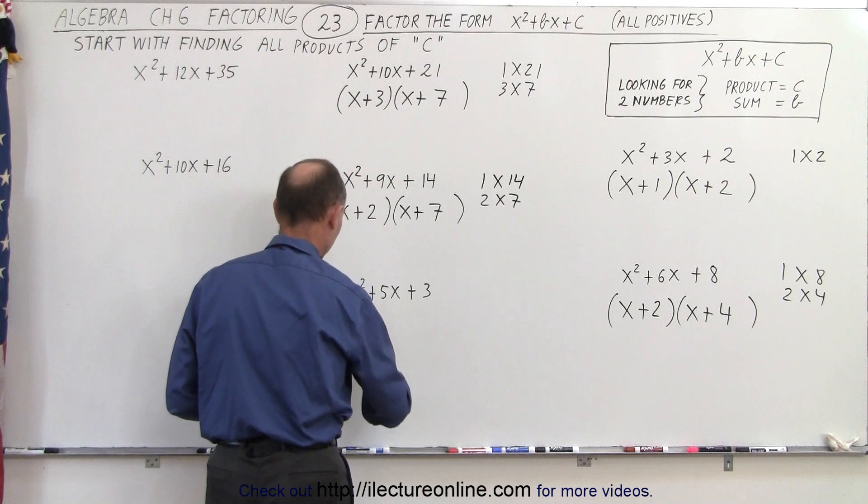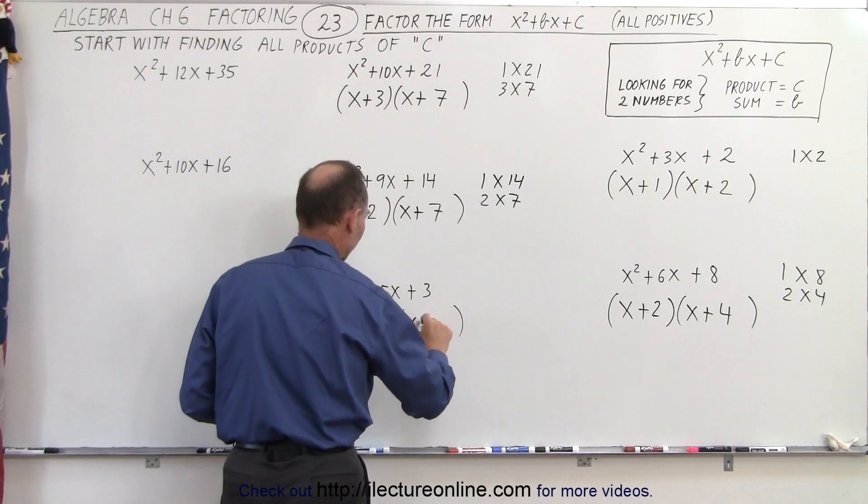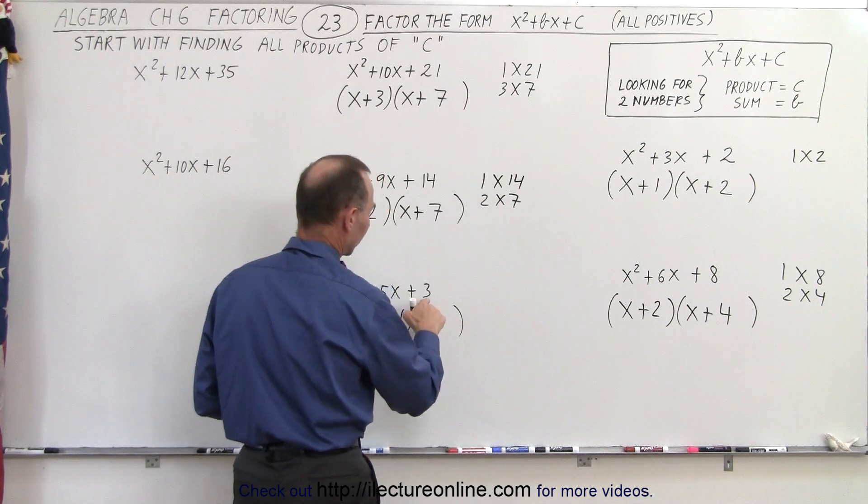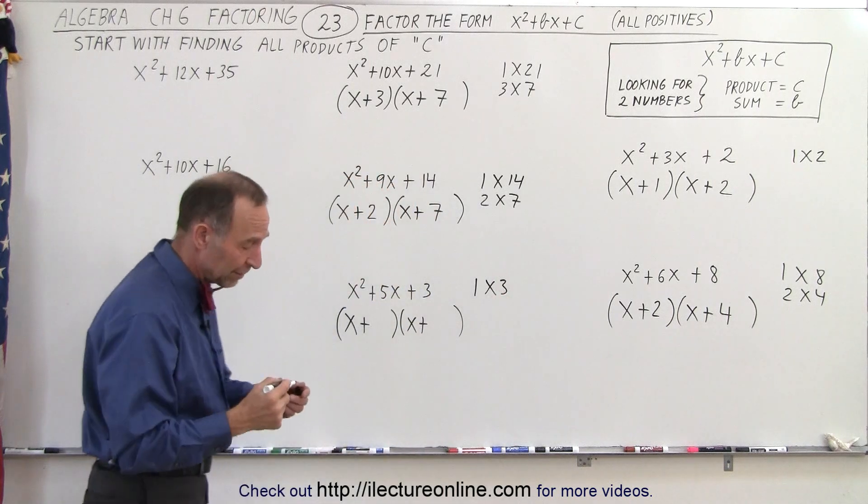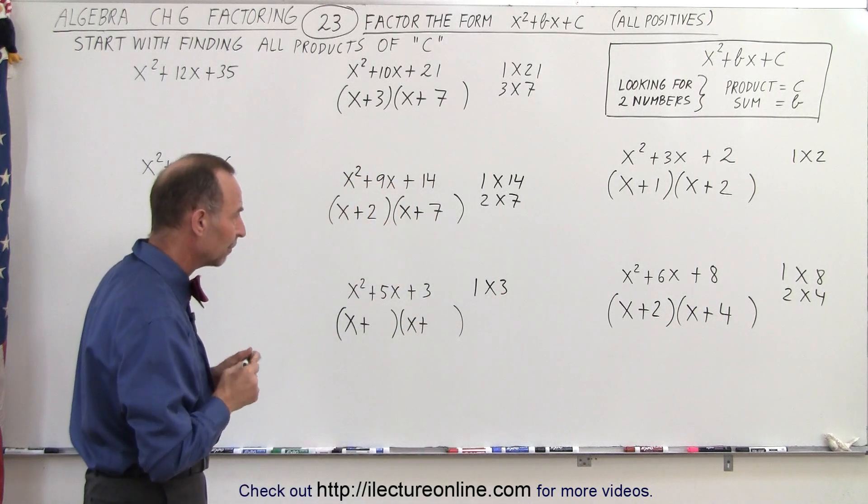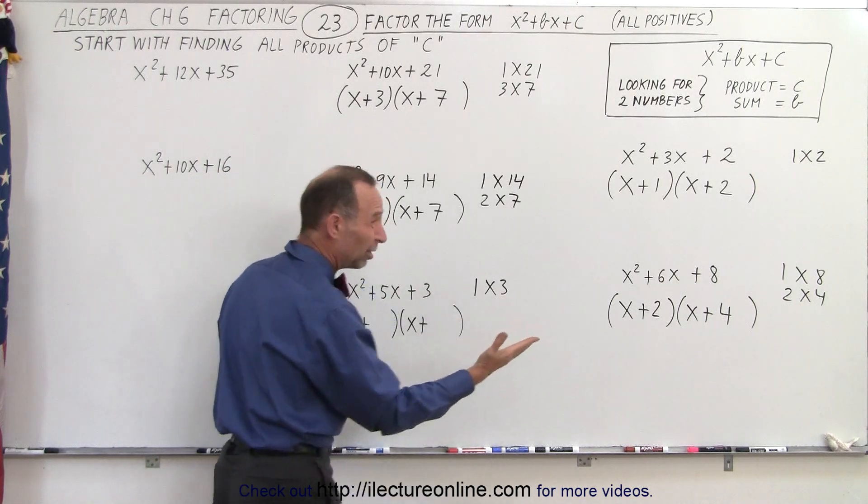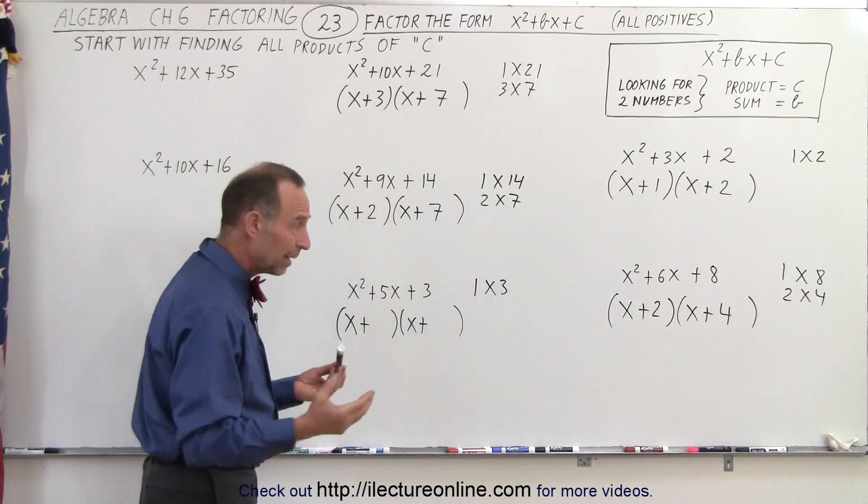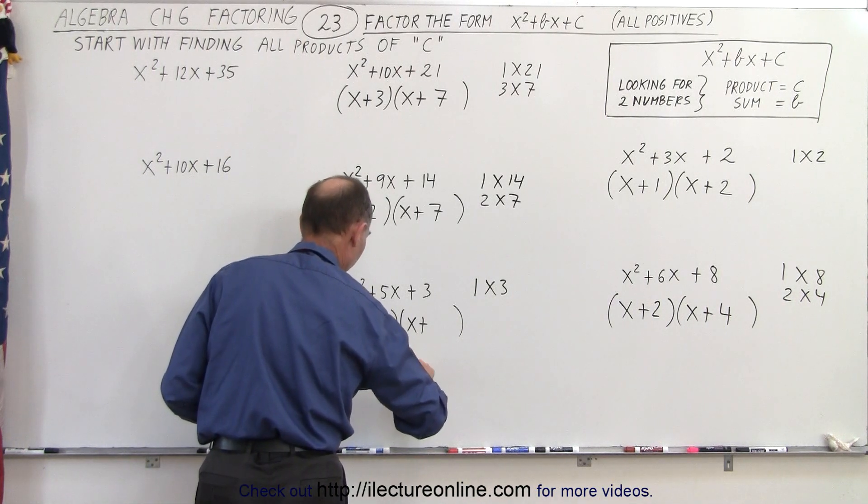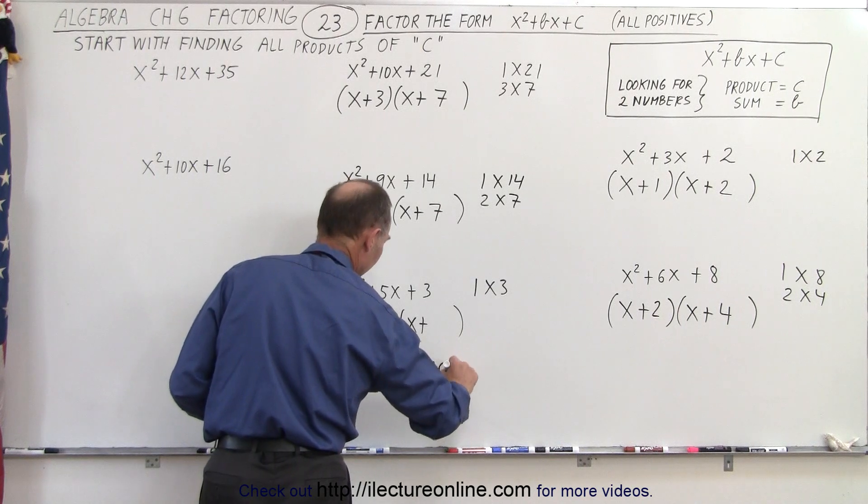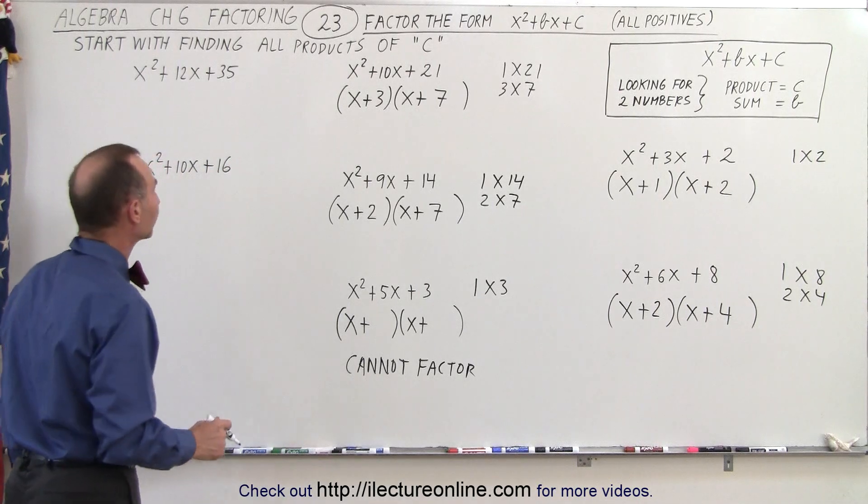Let's take a look at this number, or this polynomial, I should say. The trinomial. So x plus, x plus. So we're looking for a product that gives us 3. So 1 times 3 is the only possibility. There's no other combination of numbers that will give us 3 when we multiply. So when we add them together, that should give us 5. Well, 1 plus 3 is 4. So therefore, it cannot be done. So we can say cannot factor this trinomial. Sometimes they claim it's a prime. In other words, it cannot be factored.